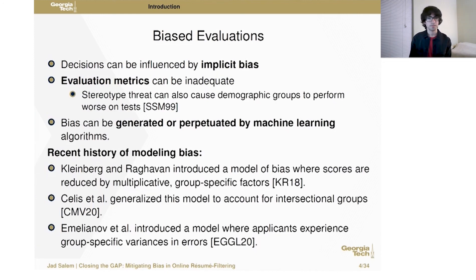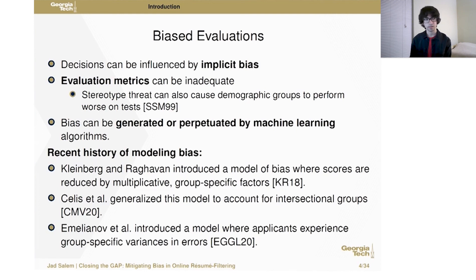There has been a lot of recent work in modeling bias. Kleinberg and Raghavan proposed a group model of bias where elements are partitioned into disjoint demographic groups and each group has a specific bias. Selis et al. generalized this to account for intersectional groups. Another interesting recent model is by Emilianov et al., who proposed a model where errors have differing variances depending on the demographic group.